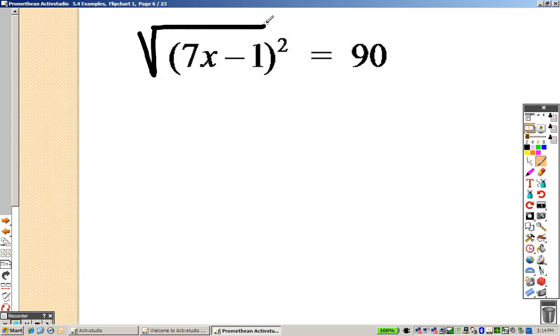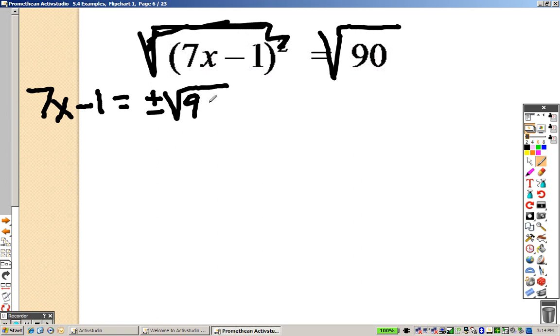With this one I square root it as well. So I square root both sides there to get rid of those. So I end up with 7x minus 1 equals plus or minus the square root of 90. It's plus or minus the square root of 90.